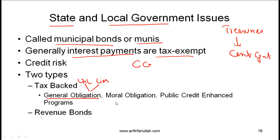Another type of tax-backed bond is a moral obligation bond. Here the issuer issues a bond and the state government or the local government is not legally bound to help make payments, but there is a moral obligation — an expectation that the local government or state government will make the payments if necessary.